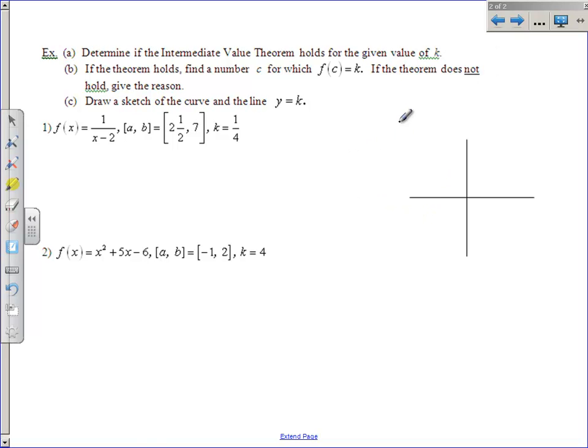We determine if the intermediate value theorem holds for the given value of k. If it holds, we have to figure out what's that number c for which they're equal. And if it doesn't hold, give the reason. Now the only thing we need for the IVT, IVT would be short for intermediate value theorem, is we have to have continuity.